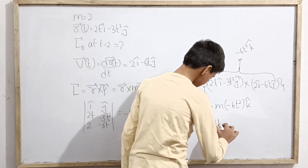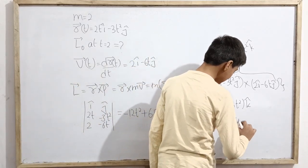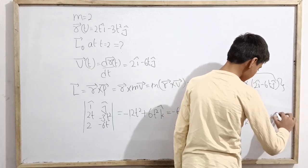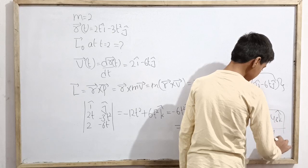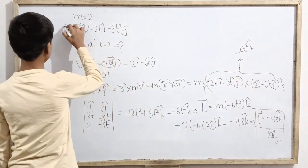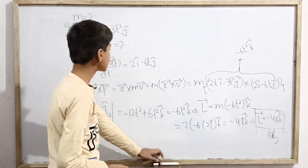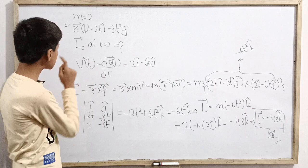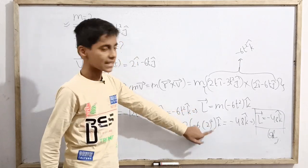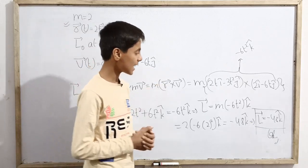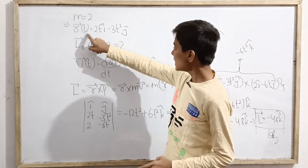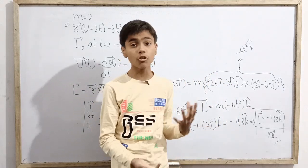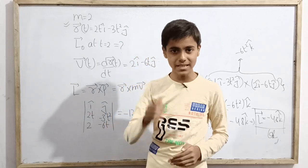And this is our answer to this question. This problem is indeed solved. Angular momentum is in k cap direction because it depends on the cross product. That was all for today, thanks for watching.